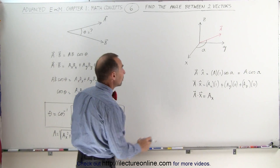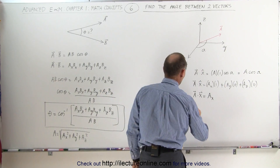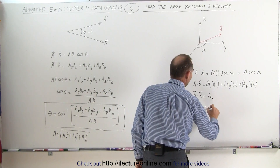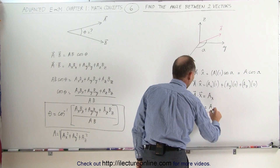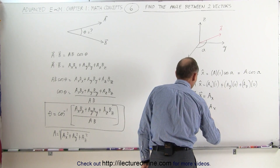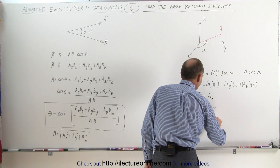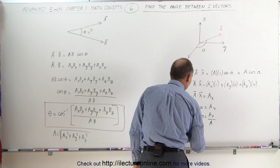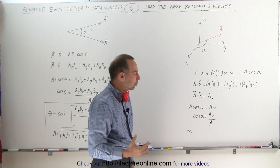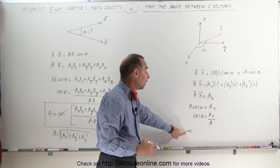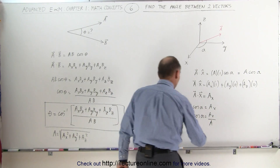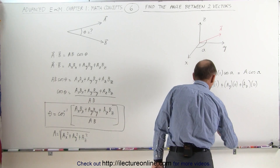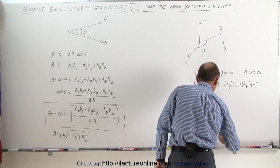Using the same technique, we set these two equal to each other: A times cos(α) equals A_x, which means that cos(α) equals A_x divided by |A|. So alpha — the direction cosine relative to the x-axis — is equal to cos(α), which equals the ratio of A_x divided by |A|.